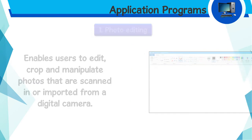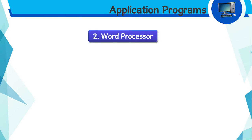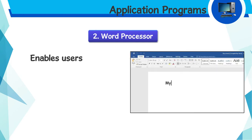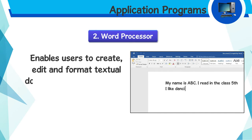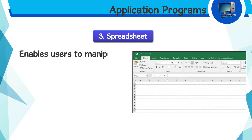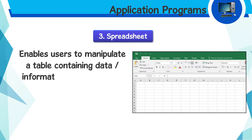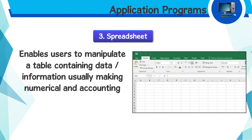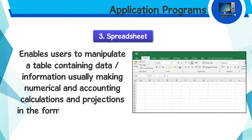Photo editing enables users to edit, crop, and manipulate photos that are scanned in or imported from a digital camera. Word processor enables users to create, edit, and format textual documents such as letters. Spreadsheet enables users to manipulate a table containing data and information.